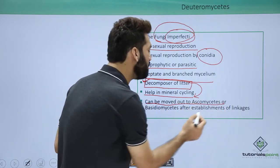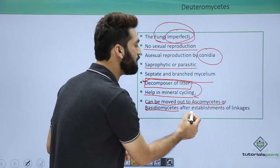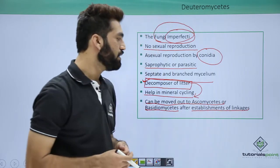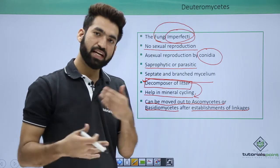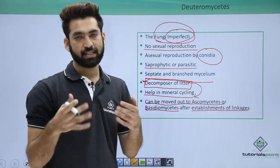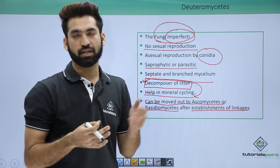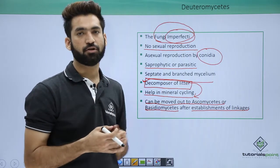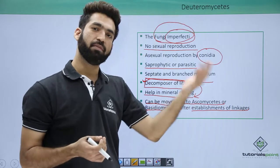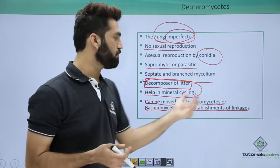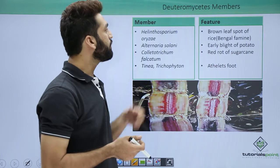An important point is that Deuteromycetes members can be moved out to Ascomycetes or Basidiomycetes after establishment of linkages. When certain linkages are found that give them characteristics distinct from Deuteromycetes, those members will be reclassified into either Ascomycetes or Basidiomycetes.